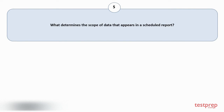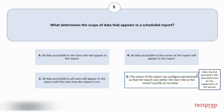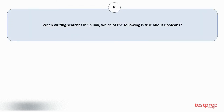Question number five: what determines the scope of data that appears in a scheduled report? Your options are: A) all data accessible to the user role will appear in the report, B) all data accessible to the owner of the report will appear in the report, C) all data accessible to all users will appear in the report until the next time the report is run, D) the owner of the report can configure permissions so that the report uses either the user role or the owner's profile at runtime. The correct answer is option D.